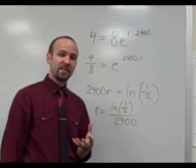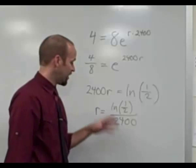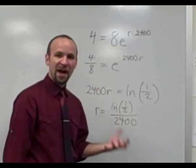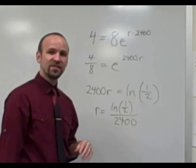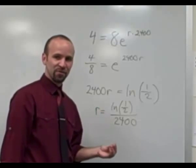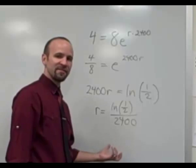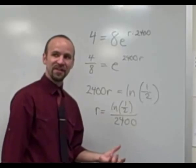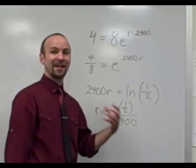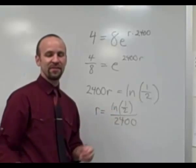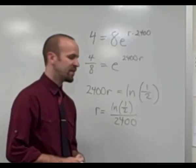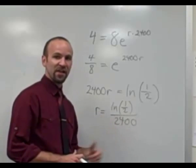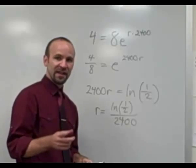We could approximate r now, but in this example we're going to use r to find the amount of Cythonium that's left, so we really prefer not to approximate it yet. If we approximate now, then when we solve for the amount of Cythonium we'd be approximating an approximation, and every time we do that we lose accuracy. So we'll use this exact value of r for the next question.